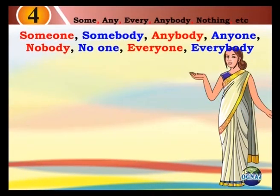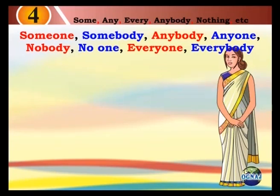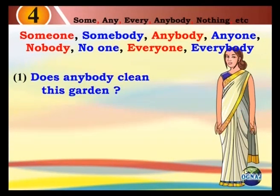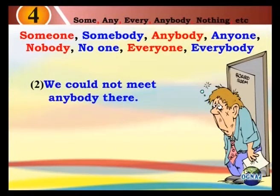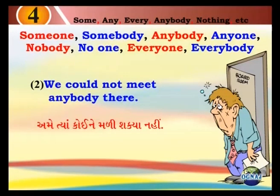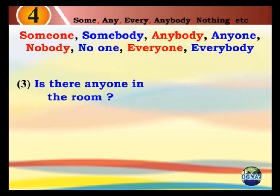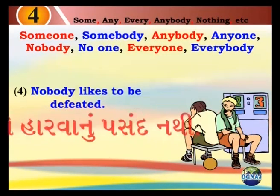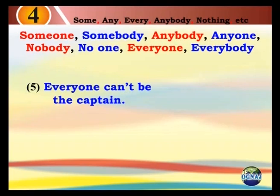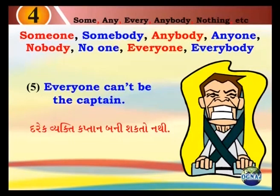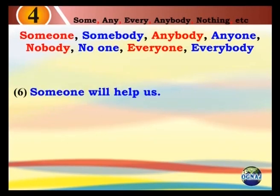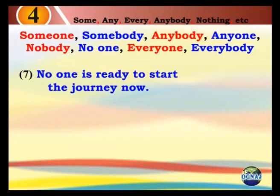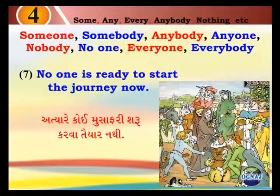Someone, somebody, anybody, anyone, nobody, no one, everyone, everybody. Does anybody clean this garden? Shumaan bhaag koi saaf kare chhe. We could not meet everybody there. Amethean koi nye maali shakya nathi. Is there anyone in the room? Shumaan bhaag koi chhe. Nobody likes to be defeated. Koi nye harvaanu patsanth nathi. Everyone can't be the captain. Darek vhyakti kaptaan bani shakto nathi. Someone will help us. Koi apanne madaad kar shay. No one is ready to start the journey now. Athiare koi musafari sharu karvaa taiyar nathi.